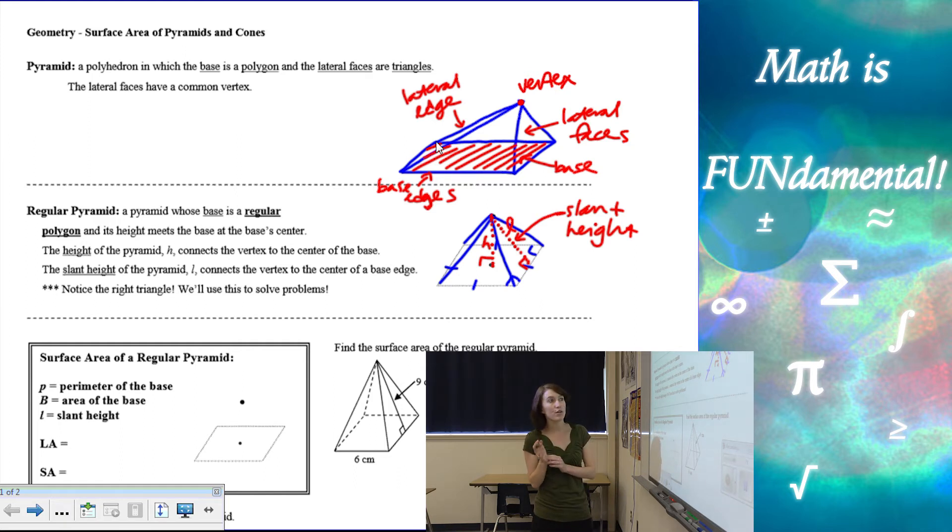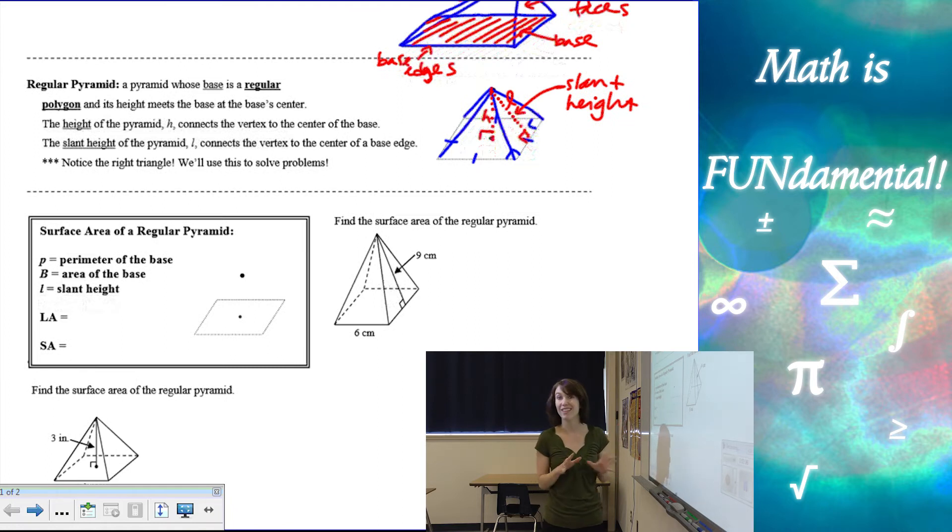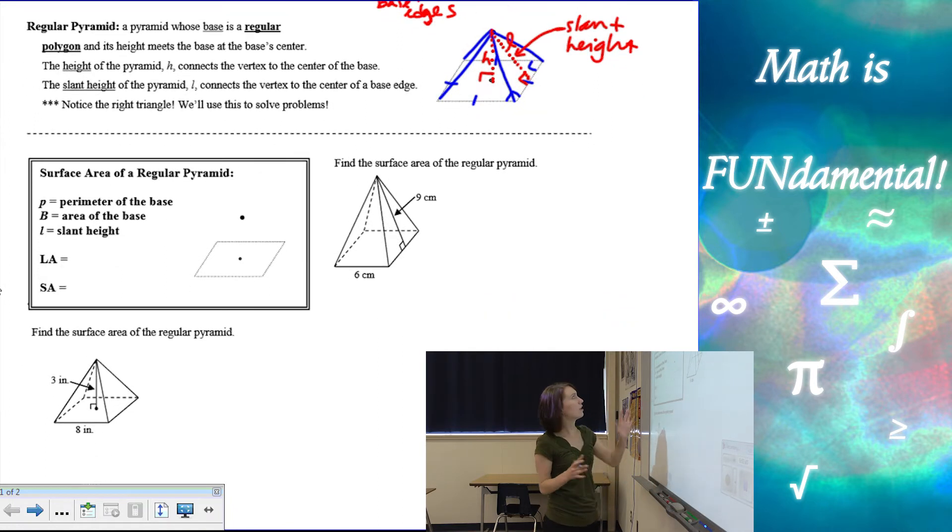So notice both of those pieces, especially the slant height, comes down to the middle of that triangle at the base edge, and it's perpendicular. That creates right triangles, which we're going to use in future problems. We're going to use Pythagorean theorem a lot with pyramids. So now let's take a look at the surface area of a regular pyramid. So this works for regular pyramids.